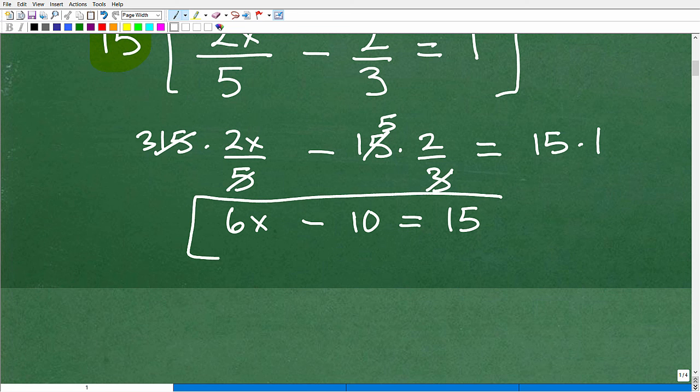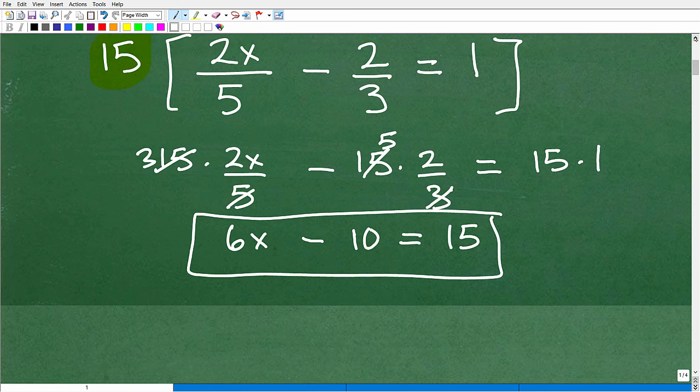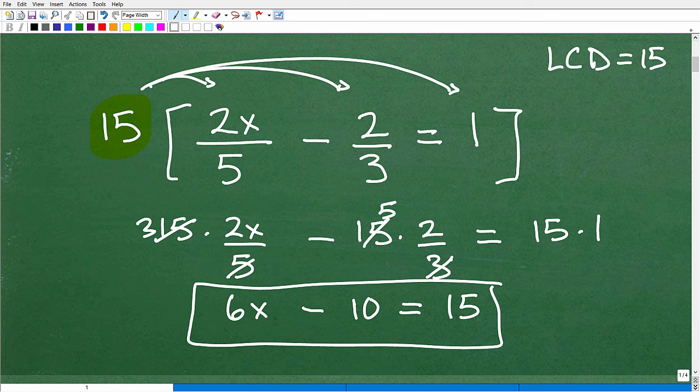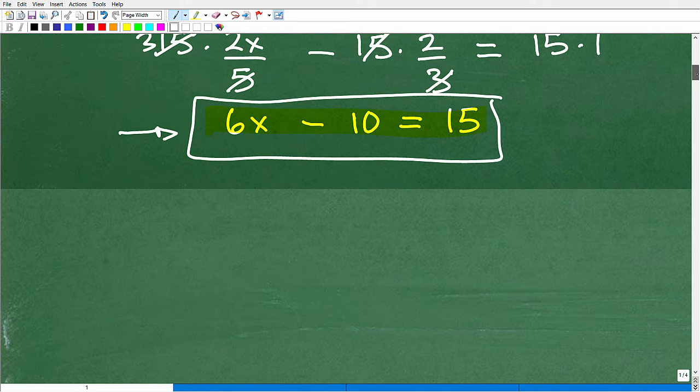Okay? So, now, just by multiplying by the LCD, okay, I was able to go from this equation here to this equation here. Okay? And they are equivalent. Okay? So, you know, ask yourself, hey, what would you rather do? Would you rather solve this guy or rather solve this guy? Okay? So, multiplying by the LCD is by far the best approach to deal with these fractions right up front. Okay? We cleared them out.